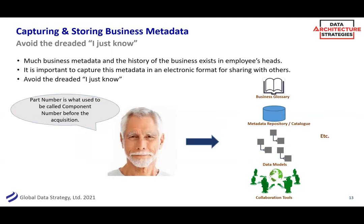My request to everyone: please avoid what I call the 'I just know' mentality. Think back to that spreadsheet that said name, date, and location. 'Location — I just know, it's the location of the store.' When you retire 20 years later, does someone know that? Or does it mean the location of the customer? That's a very big difference. How many times do you see something in data profiling — a funny field — and someone says, 'Oh, that X-Y-Z means that's a prime customer, we just knew that.' How is someone supposed to know that two years from now? Or part numbers called 'component number before acquisition' — just write it down, put it in a business glossary, metadata repository, metadata catalog, data model. There are a lot of ways to store metadata, but just document it.